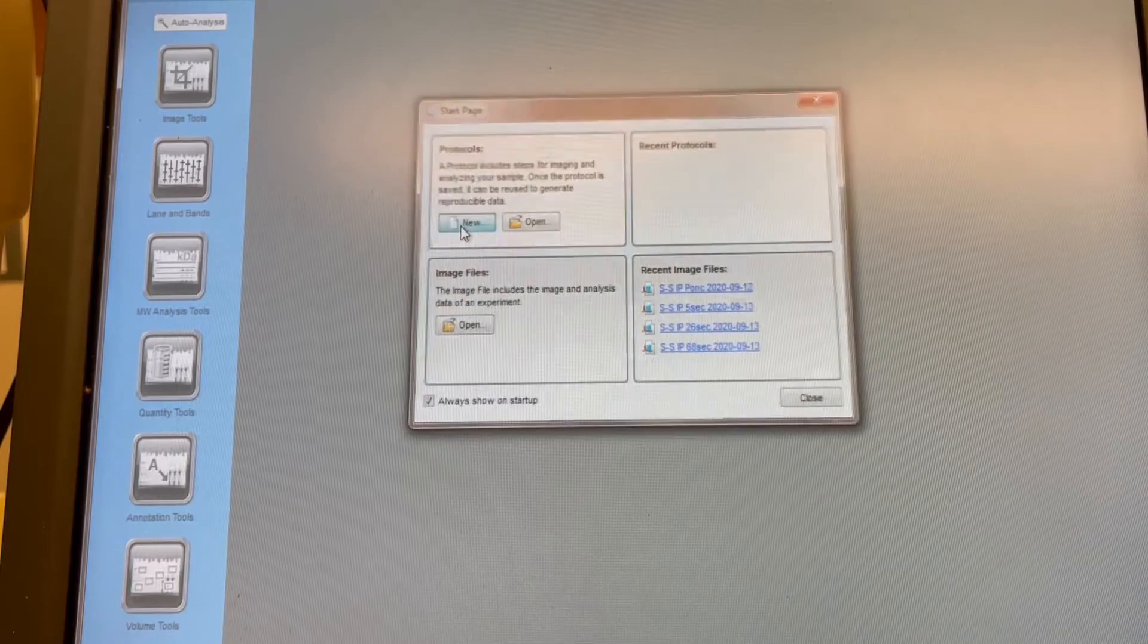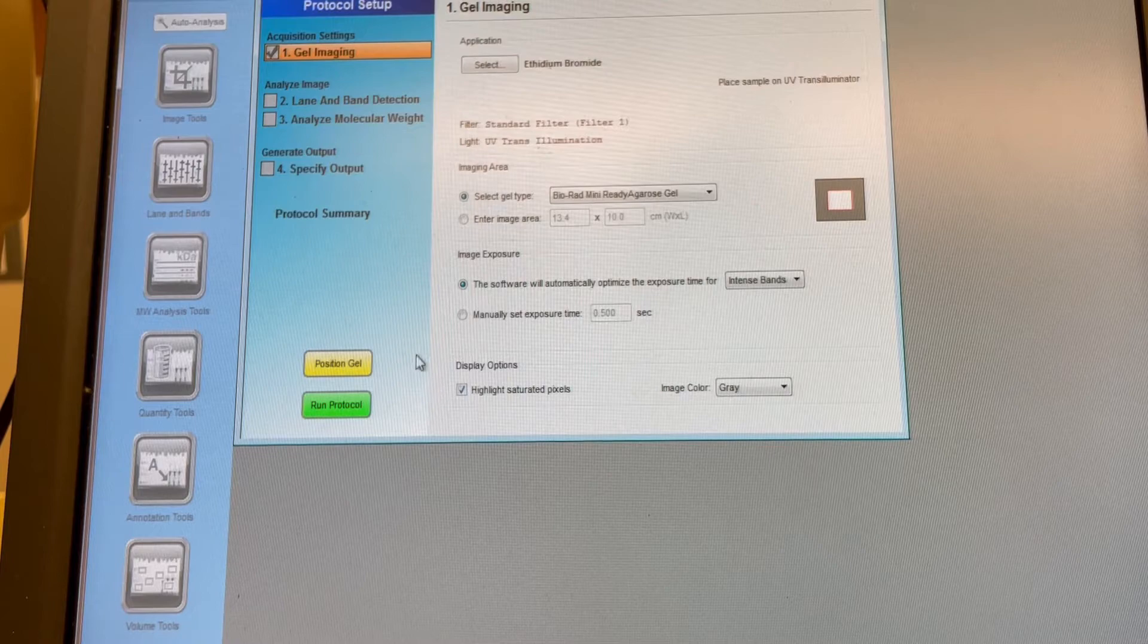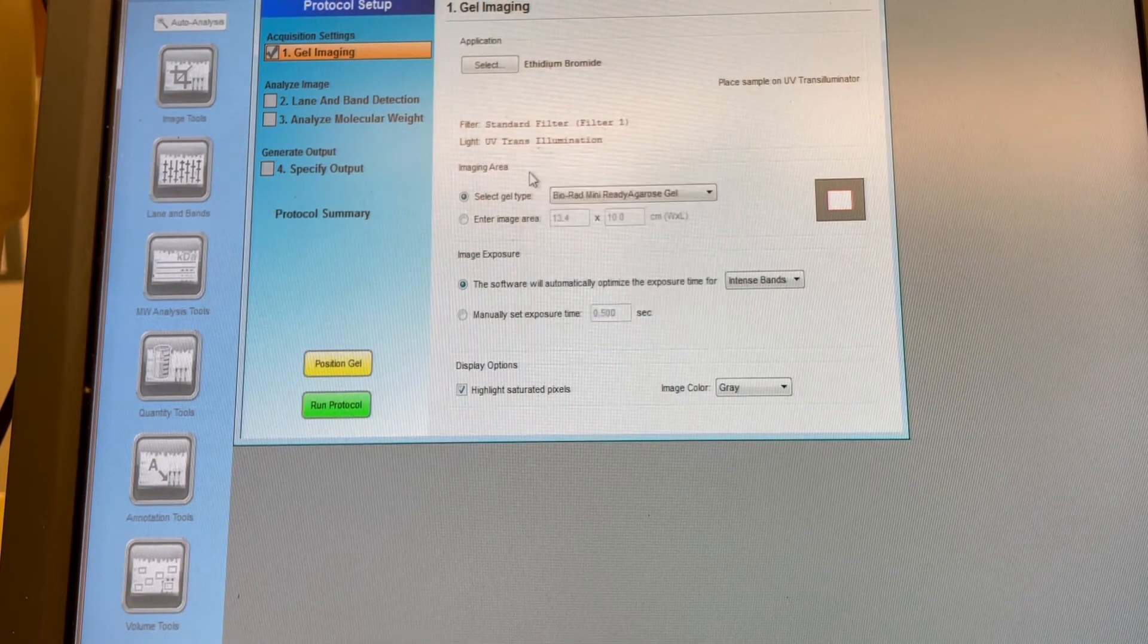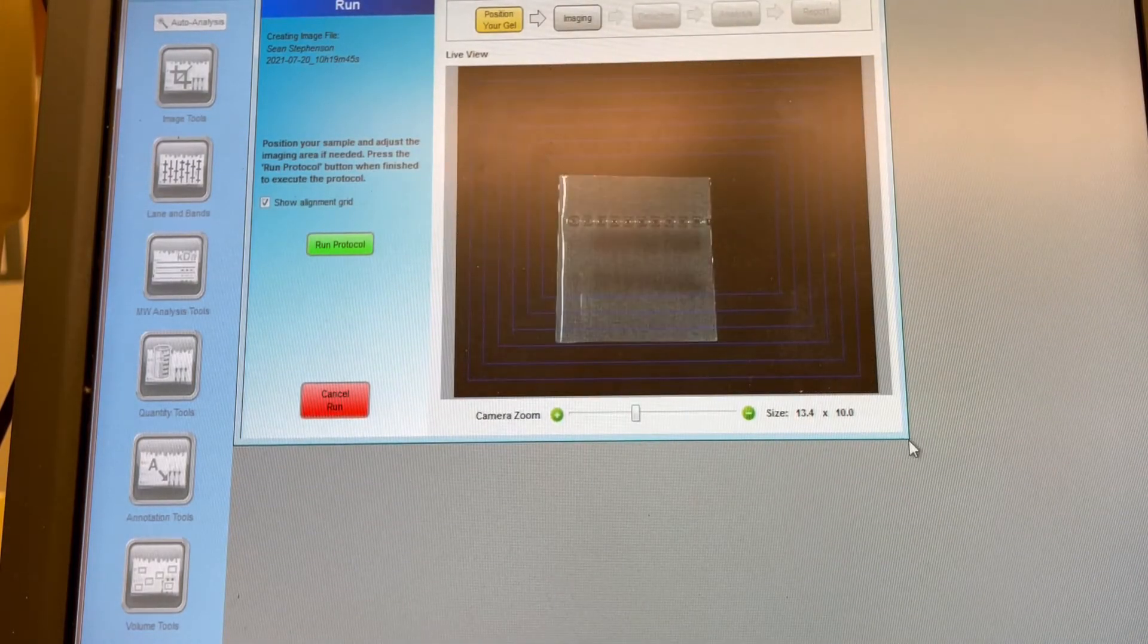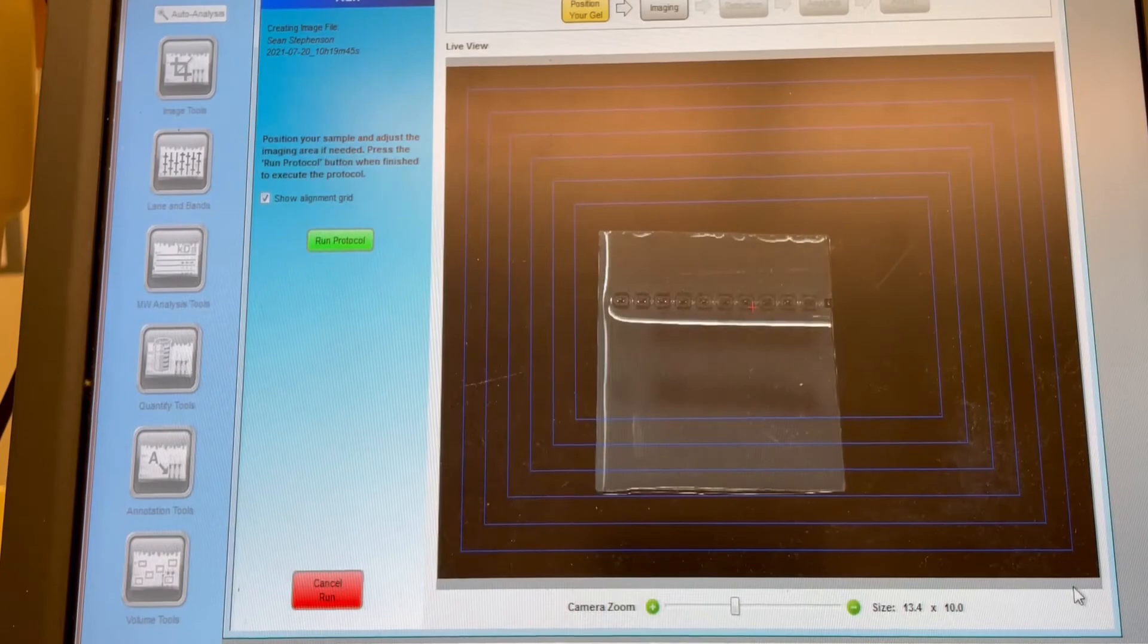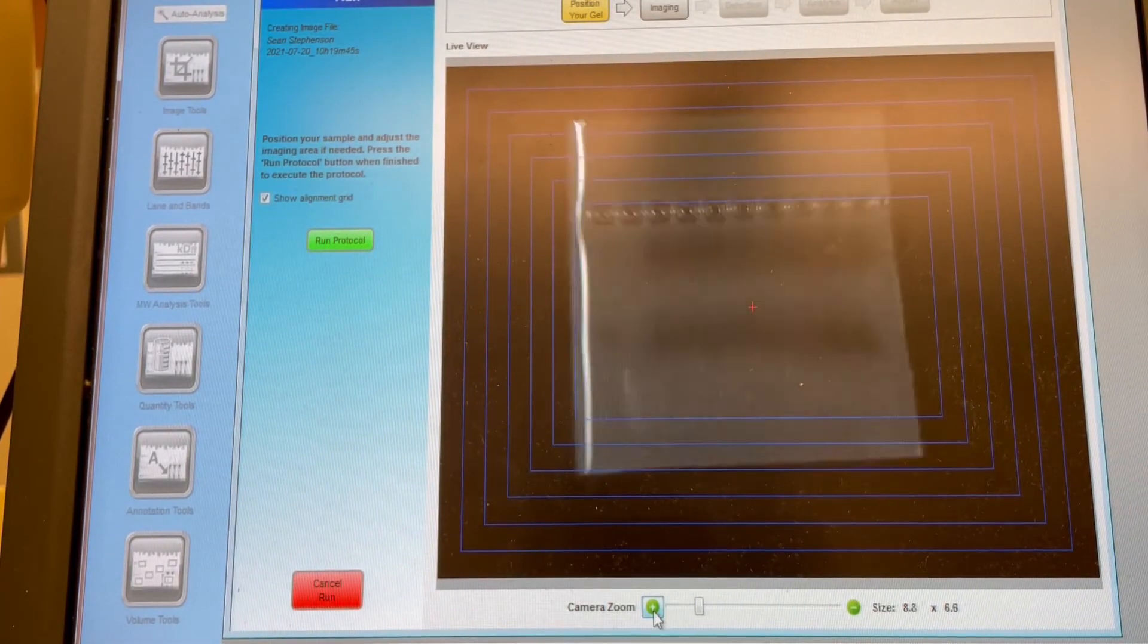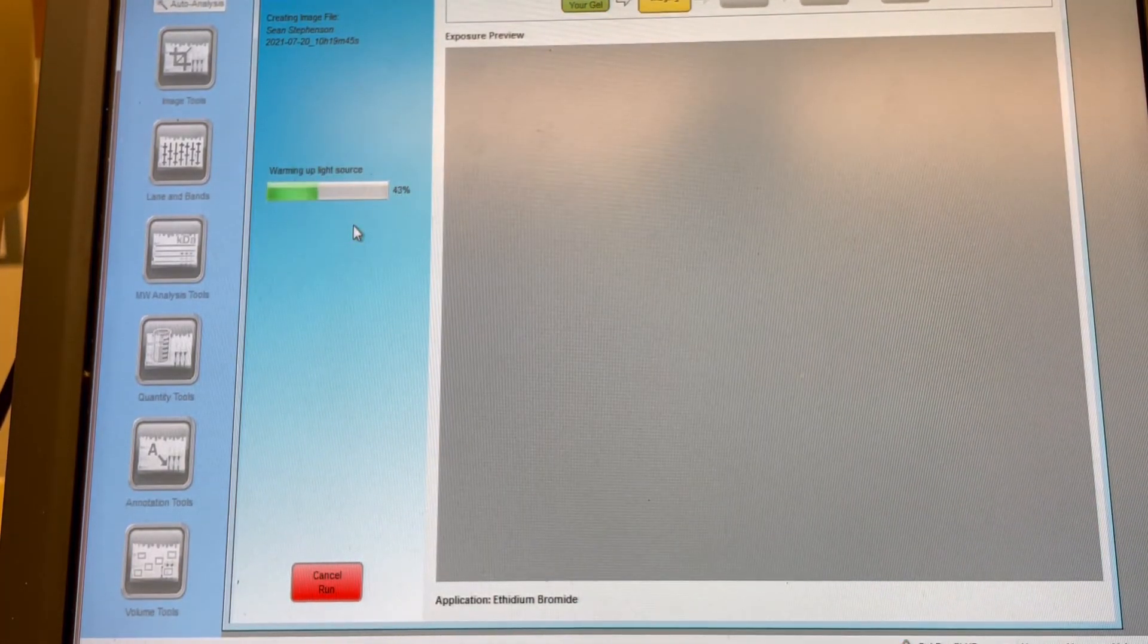The last thing to do is to image the gel. Make sure you use UV light so we can see the ethidium bromide that's bound to our PCR product. And then say a little prayer while you watch the loading bar go across the screen.